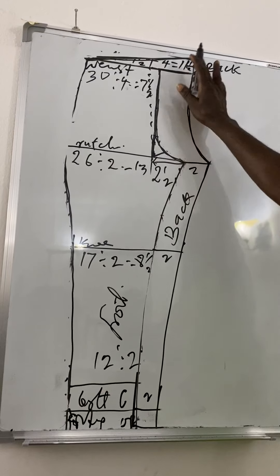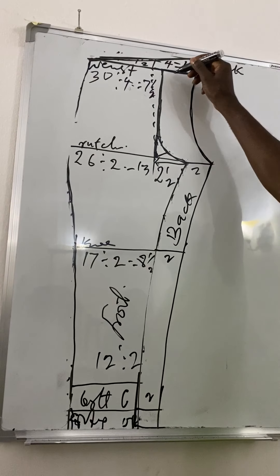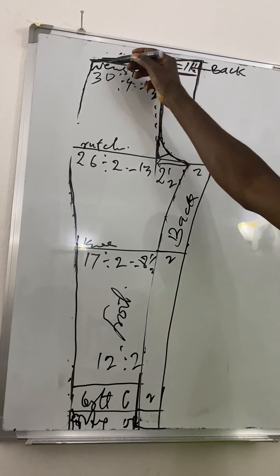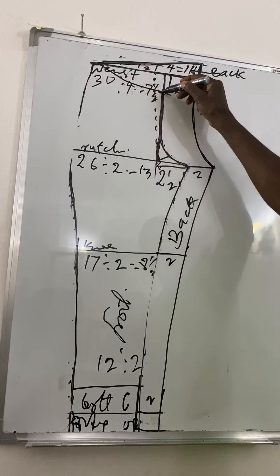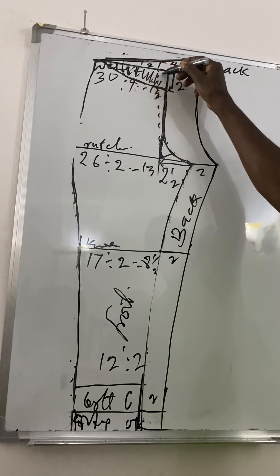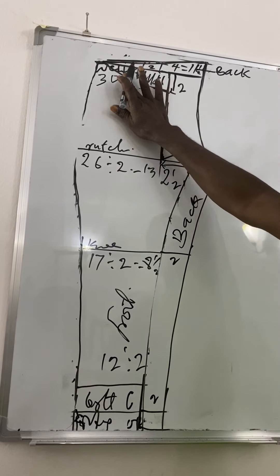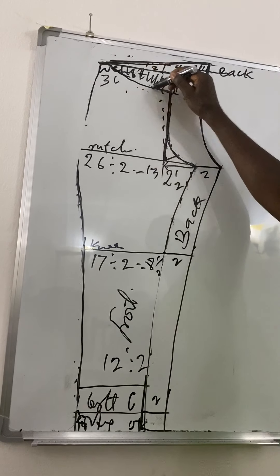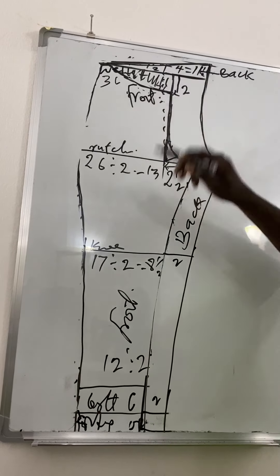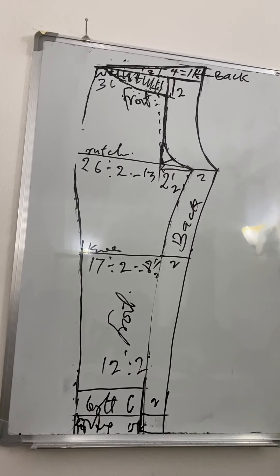Then, after you've gotten this, you can now shape the crotch length of the front. You can do 2 inches from here. You cut it out. Are we together? What are you doing now for the front? Yes. So, this is front. You've cut the front crotch.